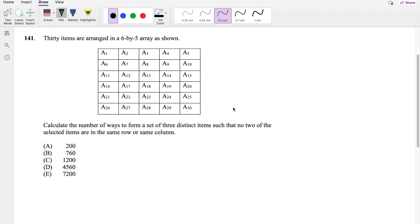Okay, assuming you already attempted it, let's just dive right in. So they're saying, calculate the number of ways to form a set of three distinct items such that no two of the selected items are in the same row or same column.